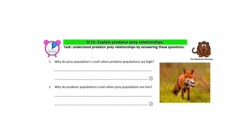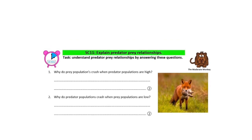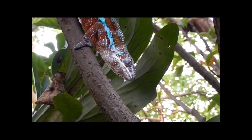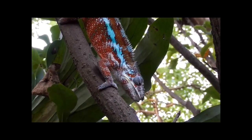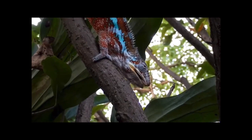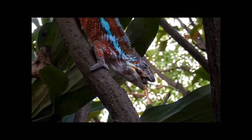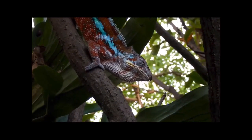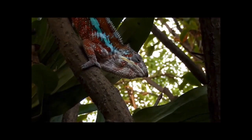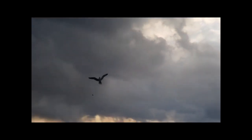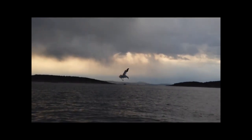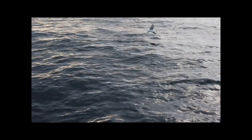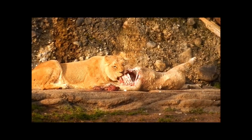On to SC11: explain predator-prey relationships. Predator and prey populations are hugely dependent on one another. The population of a predator is reliant on how many prey are available for it to eat — the more prey there are, the more likely it is that they will be successful in their hunting. The prey population is also reliant on the predator population: if there are a lot of predators around, the prey are more likely to be caught and eaten; if there are very low numbers of predators, they have a better survival rate.